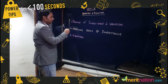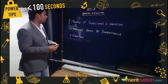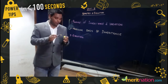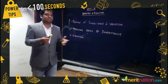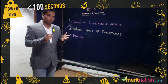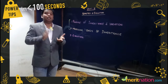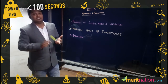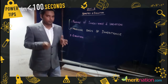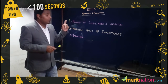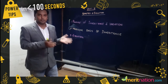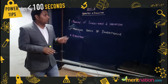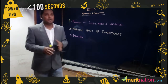First, we look at Principles of Inheritance and Variation. Mendelian genetics is very important — your monohybrid cross, dihybrid cross, back cross, test cross, and definitions like homozygous and alleles. These are very important. Then we move into the laws of Mendel, which are absolutely important.